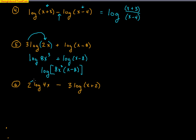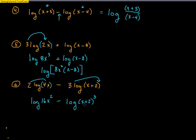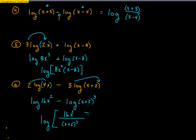Another one: that exponent of 2 goes on the entire value 4x, so that becomes log of 16x squared, because the 2 goes on both the 4 and the x. Minus log of (x plus 2) cubed — this 3 goes around the entire value x plus 2. I'll leave it as (x plus 2) cubed rather than expanding it, since addition inside a log can't be simplified further. The final answer is log of 16x squared divided by (x plus 2) cubed.